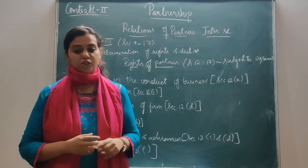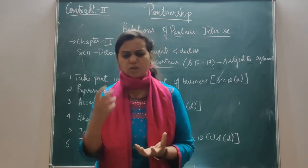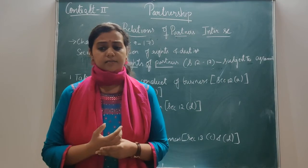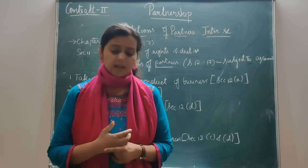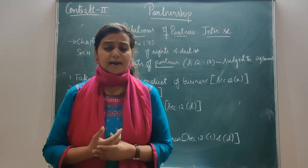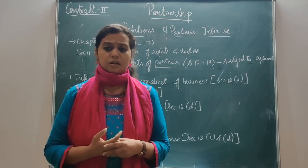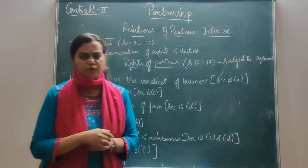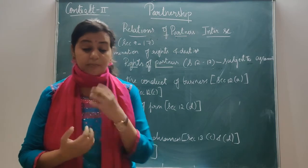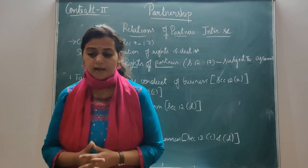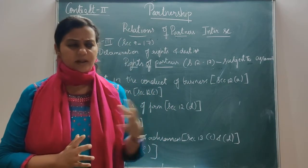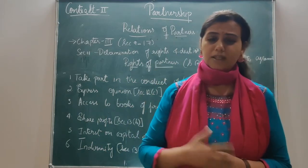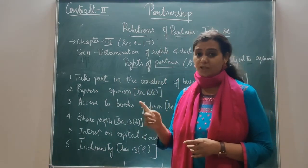A partner takes a certain loan or does something for the interest of the firm and has to indemnify whatever losses have occurred. For example, in some emergency, one of the partners has taken a loan from a bank. Now, what is partnership debt under right to indemnity? A partner — whoever the partner is, however many partners there are — is always liable for this partnership debt. And if any partner takes any loan in case of emergency, then all partners are liable for that partnership debt which is taken in the firm's name.